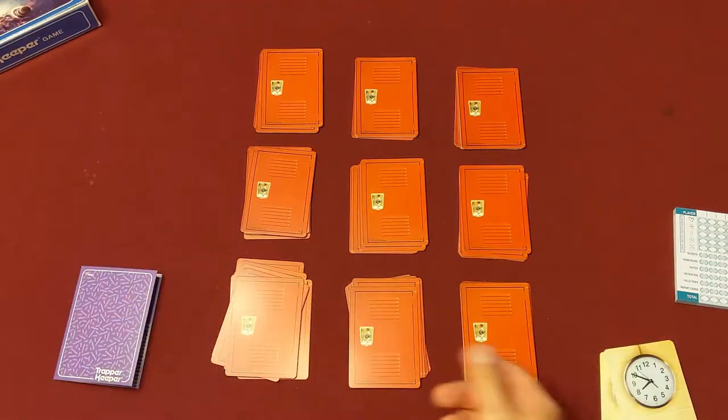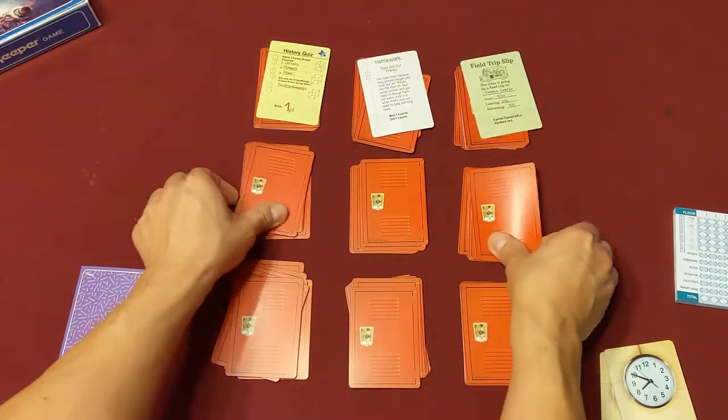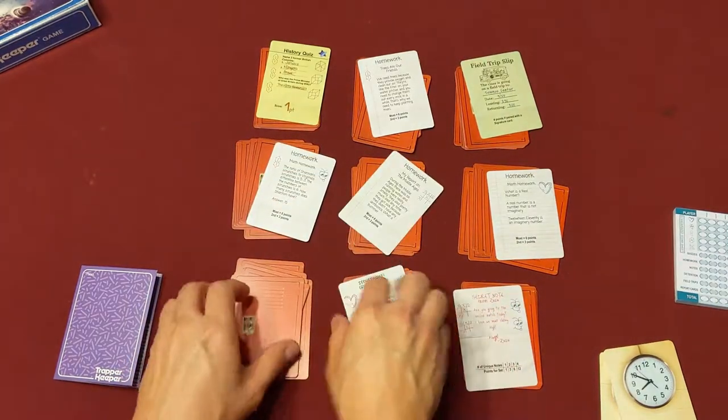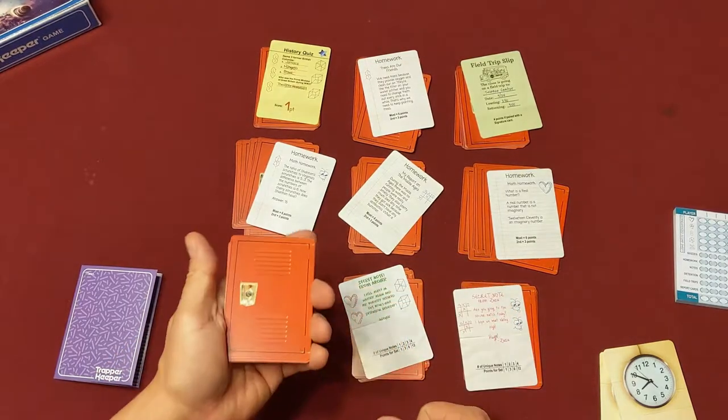All right, now that we have the cards out in these nine different stacks, we turn over the top card of each stack like so. That's pretty much the setup of the game. Let me show you what the cards are in the game and tell you what the point of the game is before we get started here.